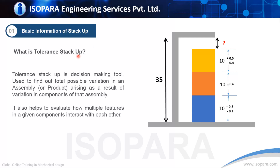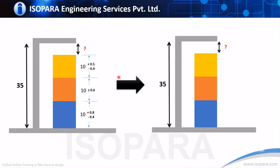What is tolerance stack-up analysis? Tolerance stack-up analysis is a decision-making tool used to determine the total variation in an assembly or product as a result of variation in individual components of that assembly. Individual components have lots of features which establish relations with each other and form a product. Variation of these features will create some variation at the product level, which we can analyze with the help of tolerance stack-up.